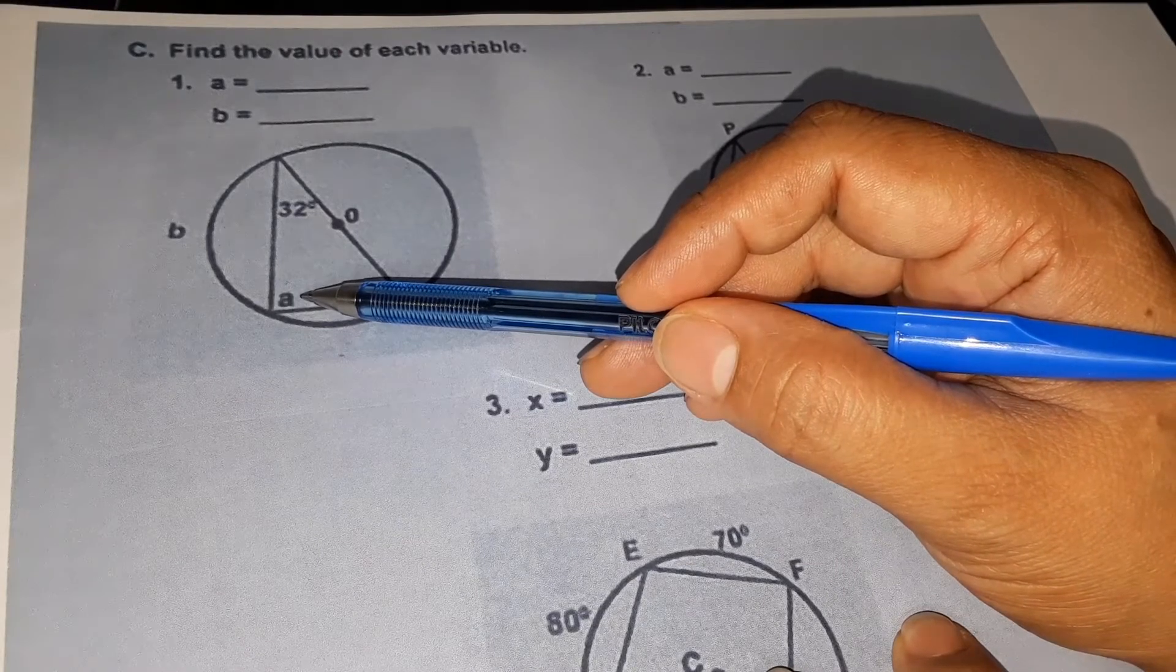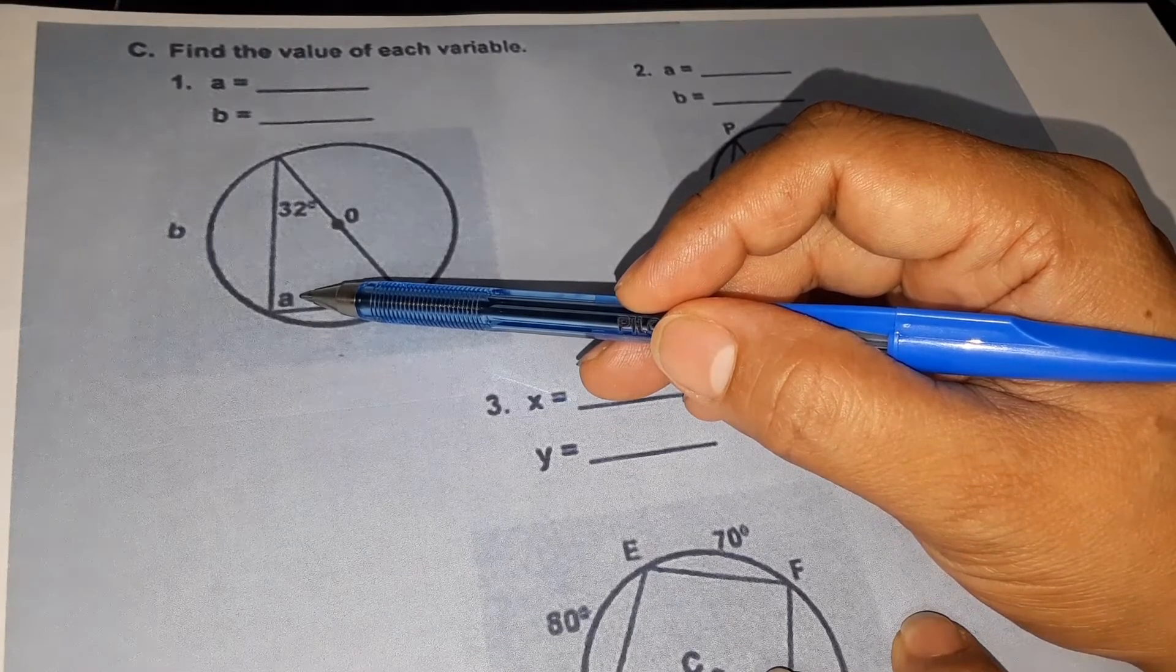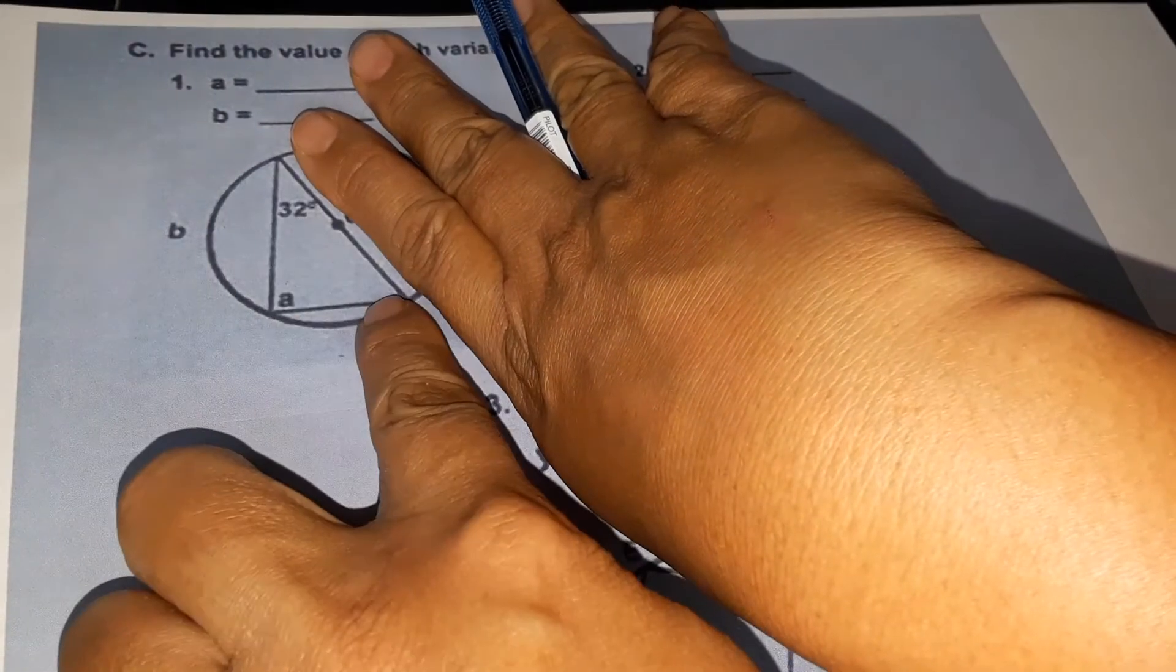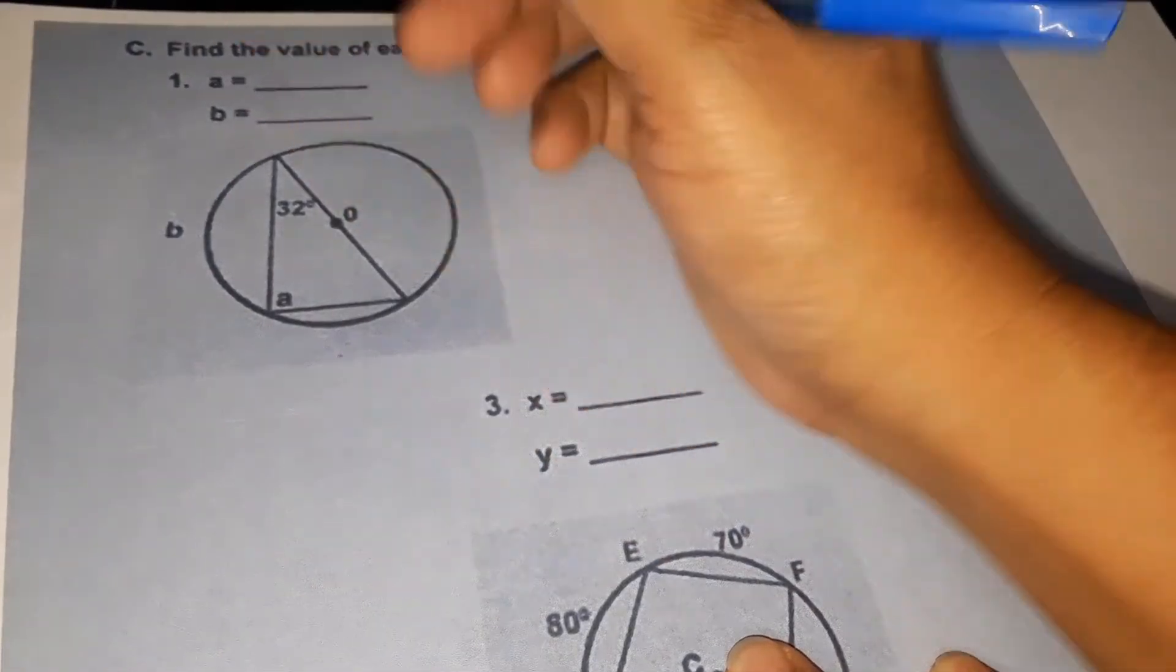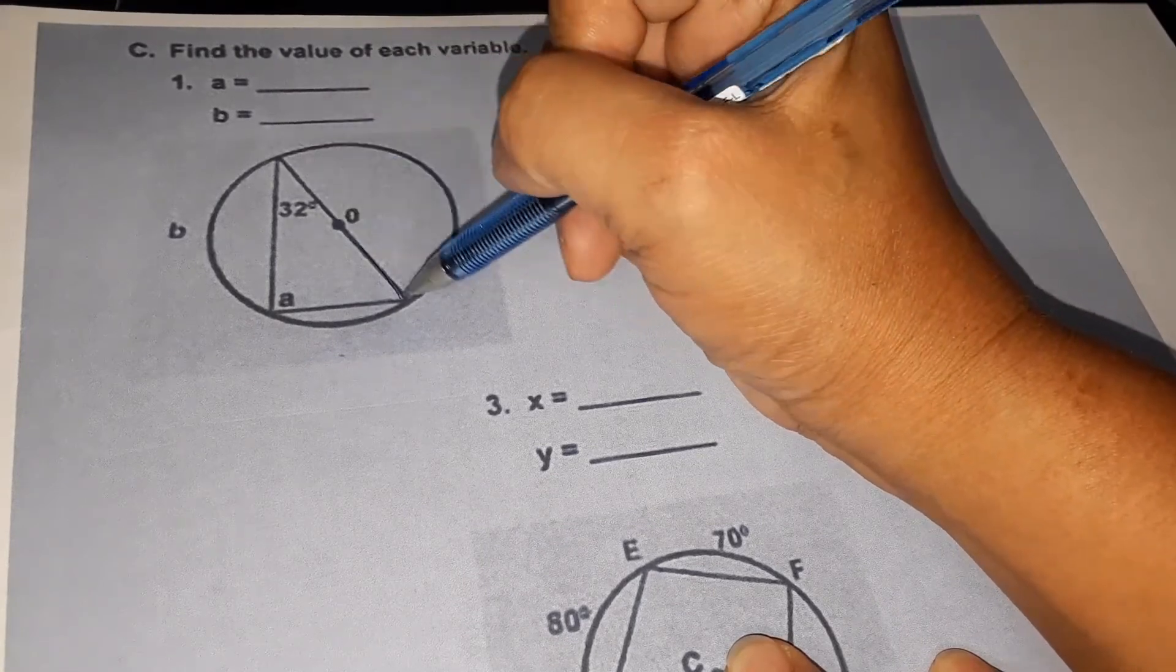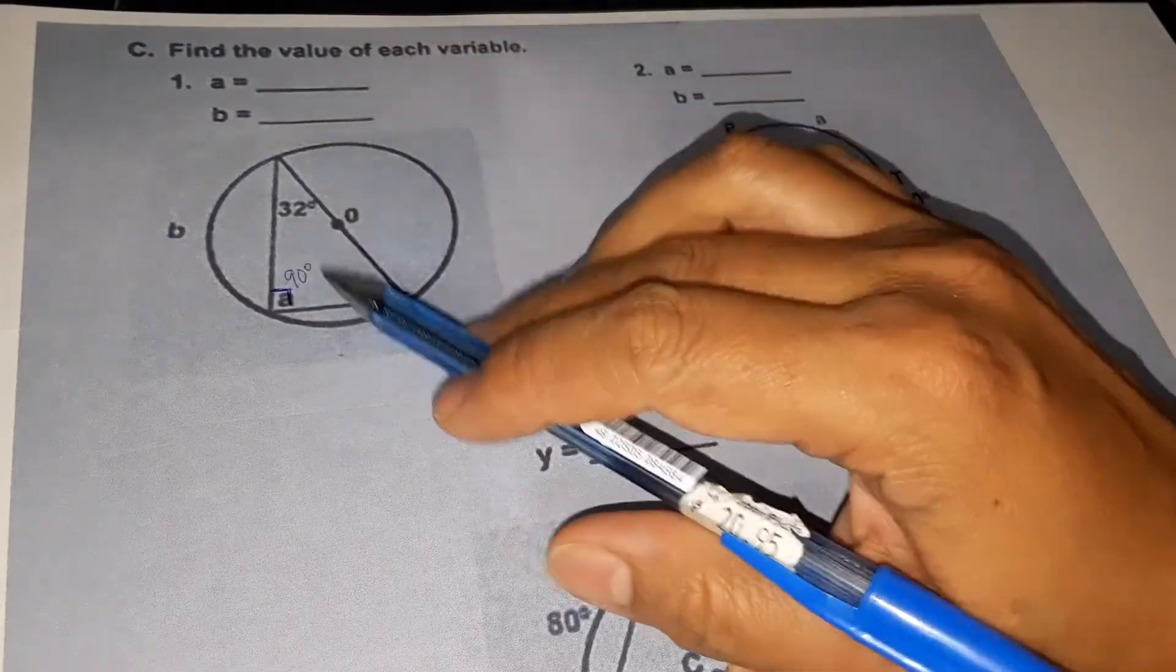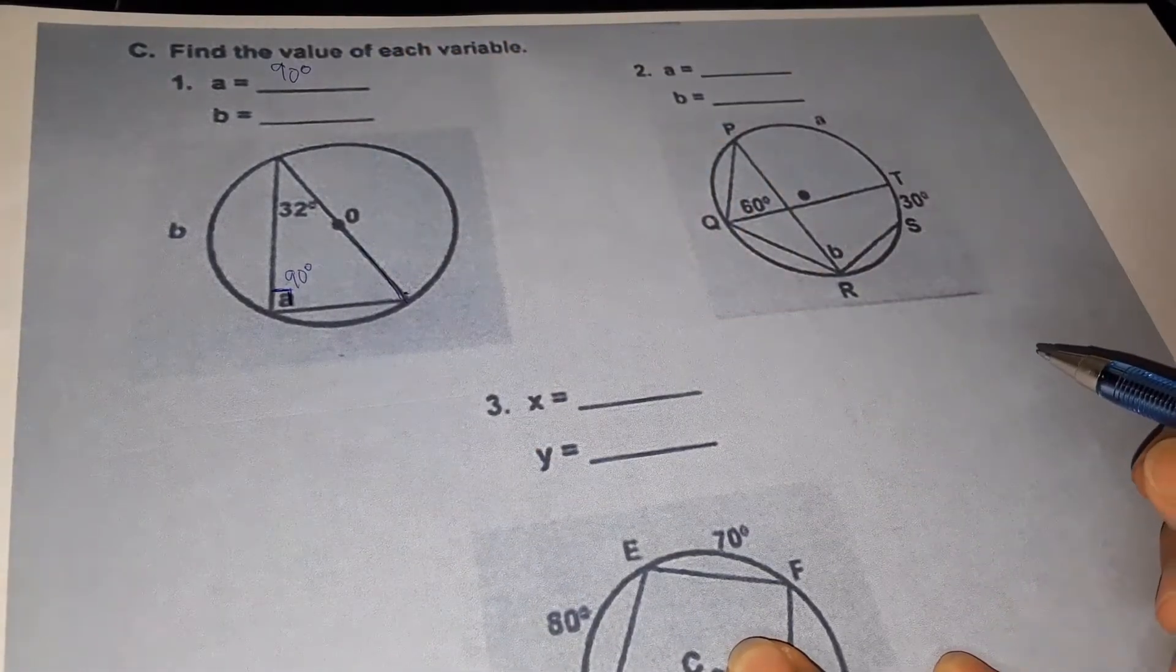According to the corollary, an angle inscribed in a semicircle is a right angle. This is a semicircle and we have this triangle inscribed on that semicircle. We know it's a semicircle because this is a diameter that passes through the center of the circle. So this angle is 90 degrees, therefore our a is 90 degrees.